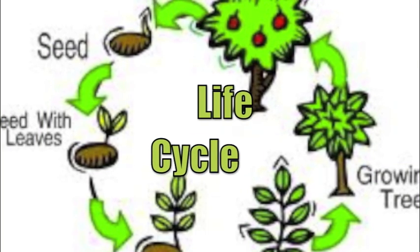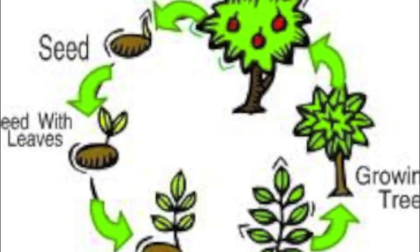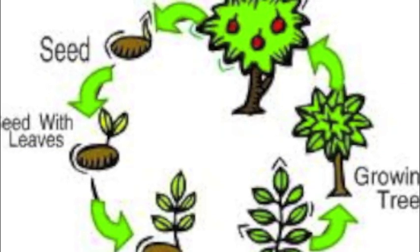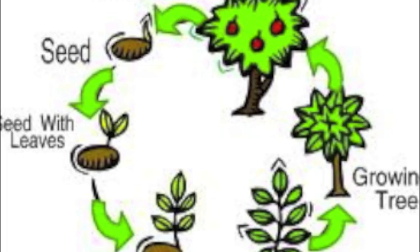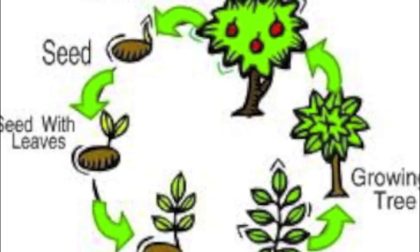All plants begin their life cycle as a seed. The seed sprouts or germinates and continues to grow until the plant becomes a mature adult flowering plant, which produces seeds.